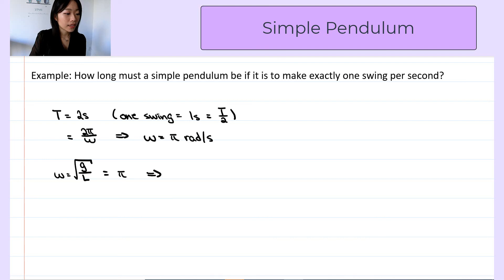Now we can solve for the length. So we take the square on both sides. G over L equals pi squared. So the length must be g over pi squared, which is around 0.993 meters.